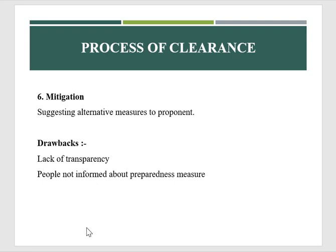After evaluating the impacts, alternative measures are suggested to the proponent, such as paying concessions to people, offering restoration of some kind of resources, or use of cleaner technology. This step also has drawbacks including lack of transparency — people will not be informed about the preparedness measures and may suddenly suffer from actions taken without prior notice.